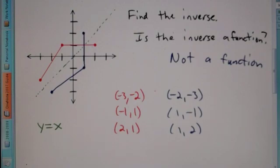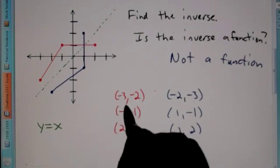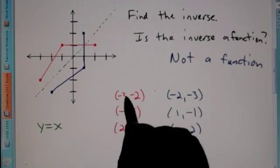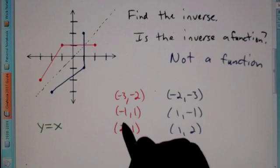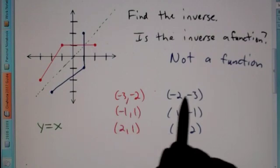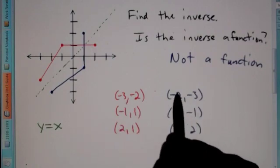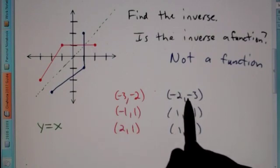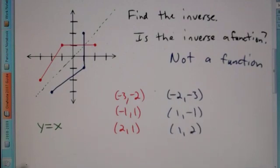So that's just another way to tell if you've got it right or not. Plot the coordinates, write out what the coordinates are for the original, flip the x and y, then graph those and connect the dots to find the inverse.